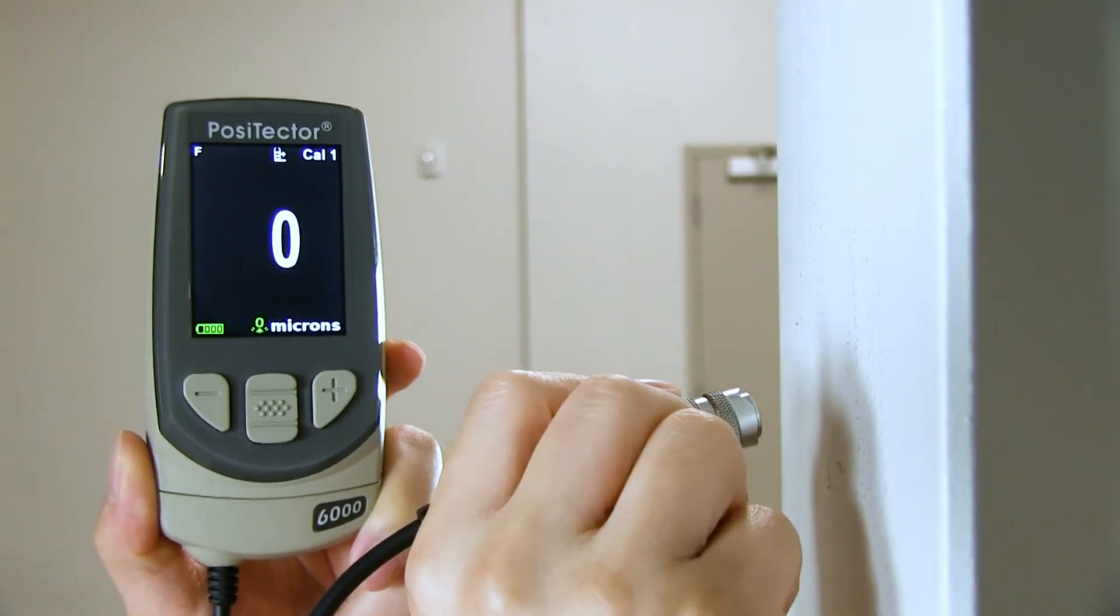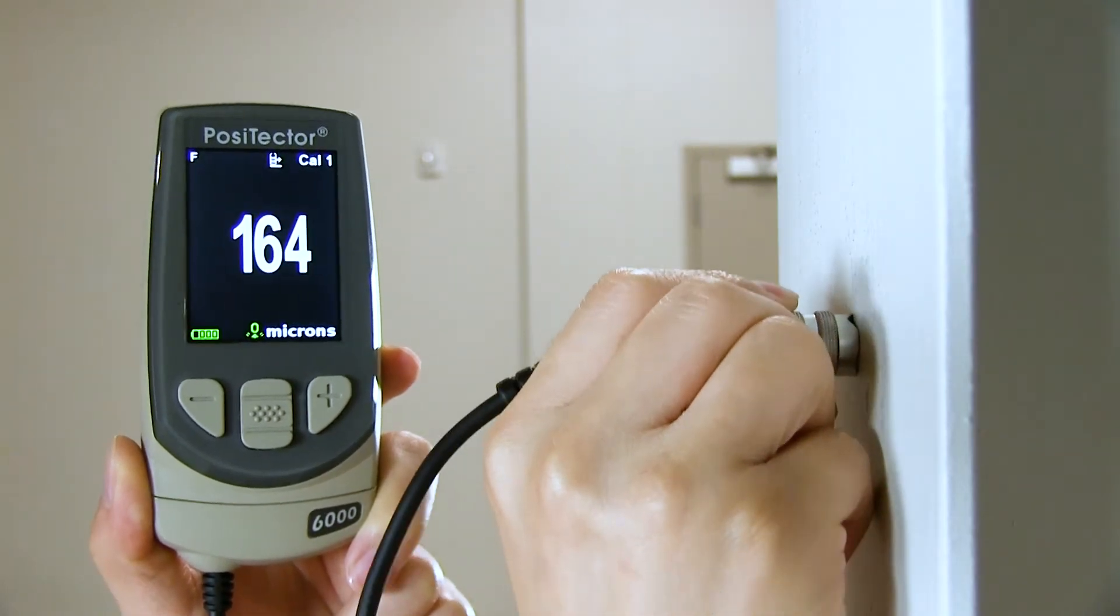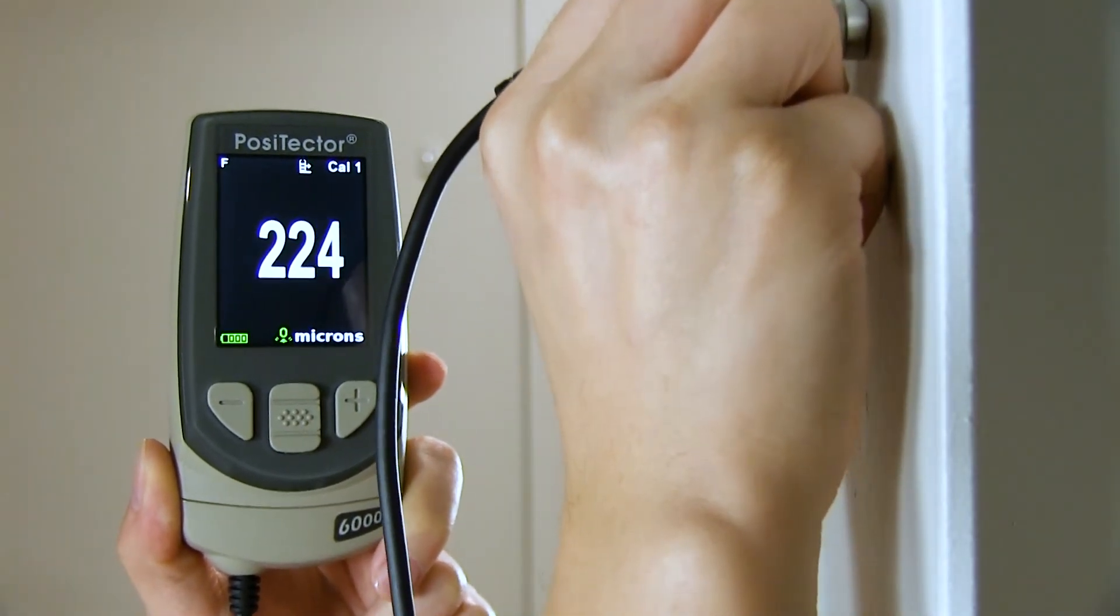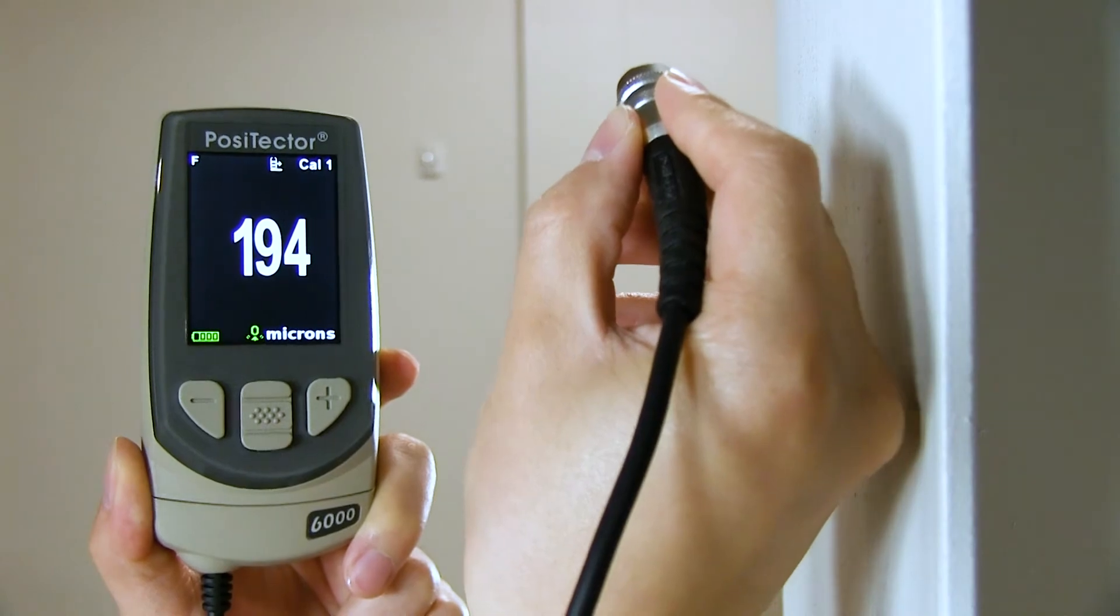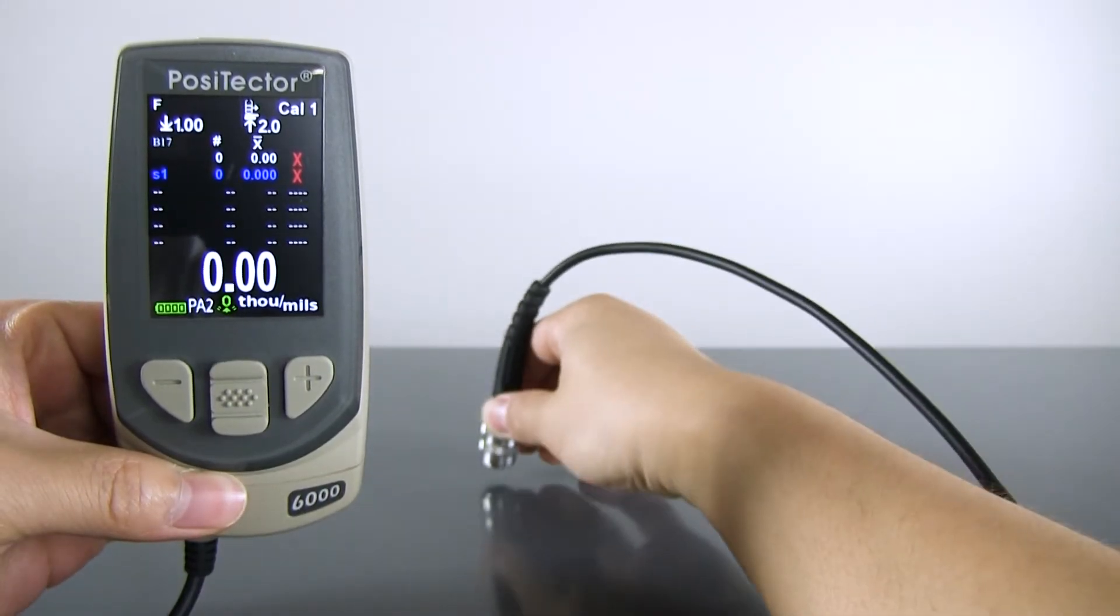There are three ways to scan with the Positector 6000. In normal scan mode, each reading is displayed and saved to memory if enabled. Normal scan can be used in conjunction with other modes.